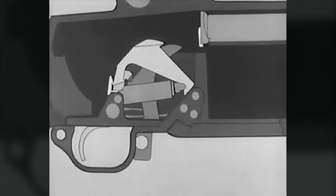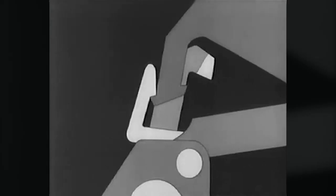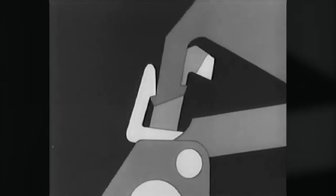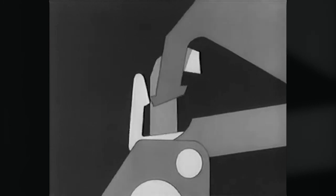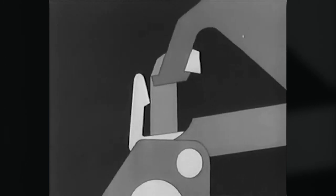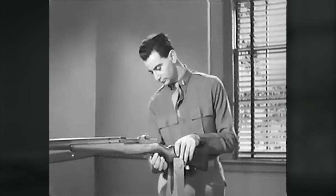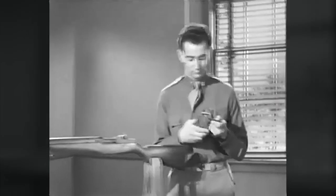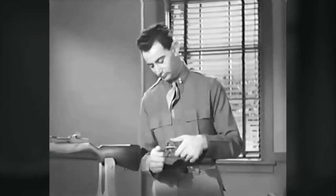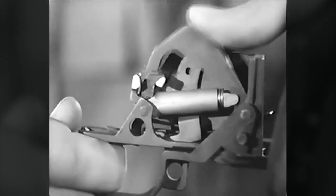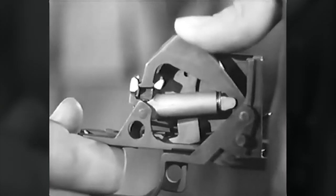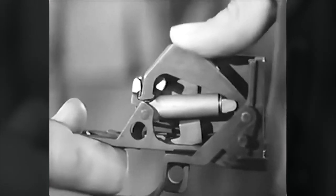Now we let the trigger forward. It frees the sear from the hammer, which starts forward. But it is caught by the trigger lug. Watch it once more. Let's take a look at the same action on the rifle itself. Here's the trigger mechanism. Watch the hammer move up and catch on the trigger lug as the trigger is released. It's a very slight movement.